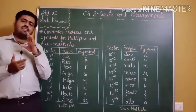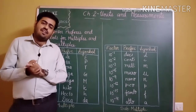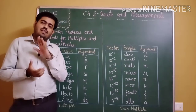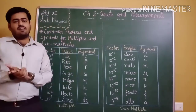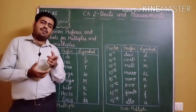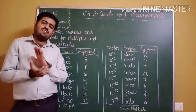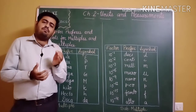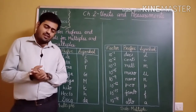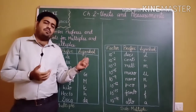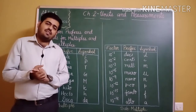Deci ko centi mili: deci means 10 to the power minus 1, centi means 10 to the power minus 2, milli means 10 to the power minus 3. Pico ko femto: pico is 10 to the power minus 12, femto is 10 to the power minus 15. And atto akela: atto means 10 to the power minus 18.